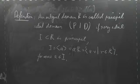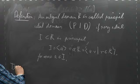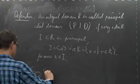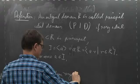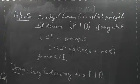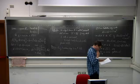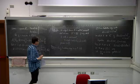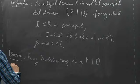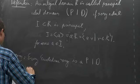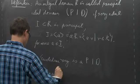Theorem: every Euclidean ring is a principal ideal domain. This is actually quite simple — we just use division with remainder. Let R be a Euclidean ring and take an ideal I.